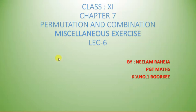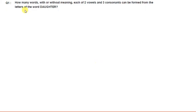Good morning dear students. Today we are going to start the miscellaneous exercise of chapter 7. This is the first question of the exercise: How many words, with or without meaning, each of two vowels and three consonants, can be formed from the letters of the word DAUGHTER?